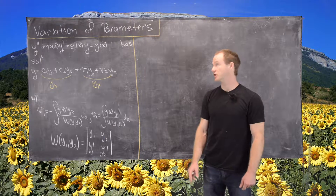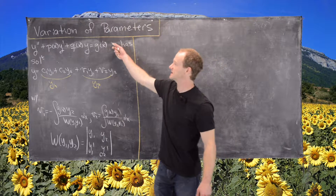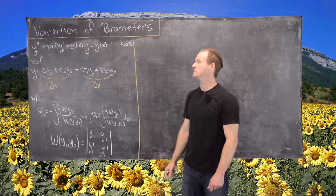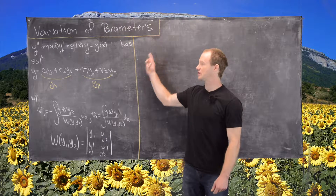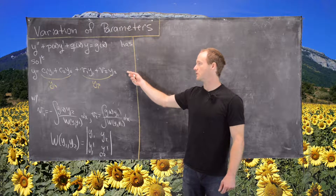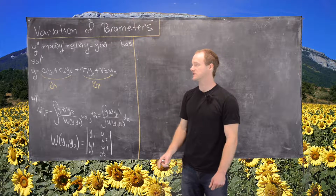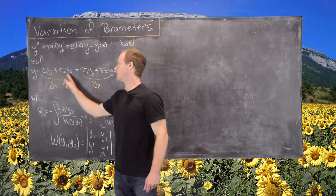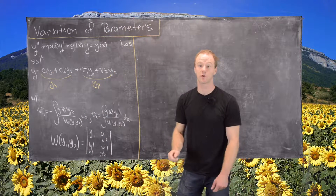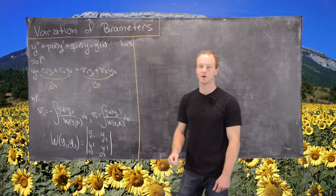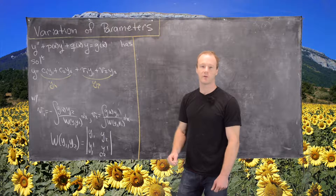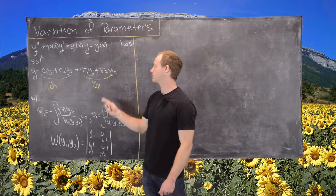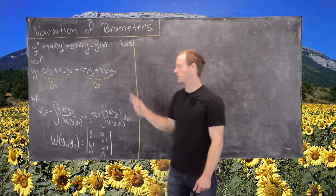Let's recall the general strategy. If we have the differential equation y double prime plus p of x times y prime plus q of x times y equals g of x, we have a general solution given by y equals c1 y1 plus c2 y2 — that is the solution to the corresponding homogeneous differential equation, where c1 and c2 are constants and y1 and y2 are linearly independent functions — plus v1 y1 plus v2 y2, which is the particular part of the solution.